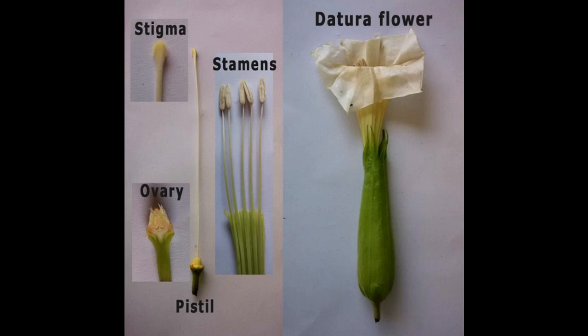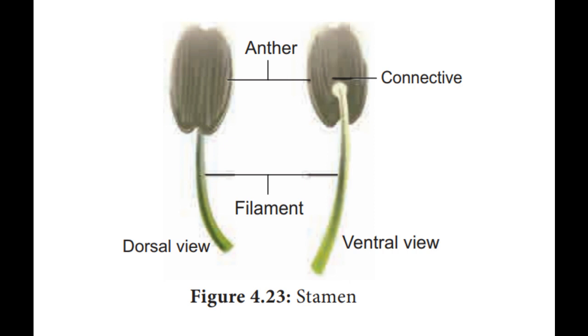If we remove the petals, we can see soft elongated structures attached to the petals called stamens. These stamens are called the male part of the flower. There is a bulb-like structure at the top of each stamen called the pollen sac or anther. Just below it is a fine whitish thread-like structure called the filament, which attaches the anther to the petals. In datura, the stamens have an elongated filament and a bulb-like pollen sac.